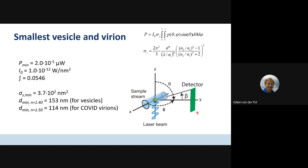The next question was to calculate what the smallest vesicle diameter would be that you could detect with this flow cytometer. For that, you just change the order of solving this equation. In this case, we set P equal to the minimum detectable power, which is 2×10⁻⁵ microwatts. All other values stay the same; the only unknown is the diameter D.